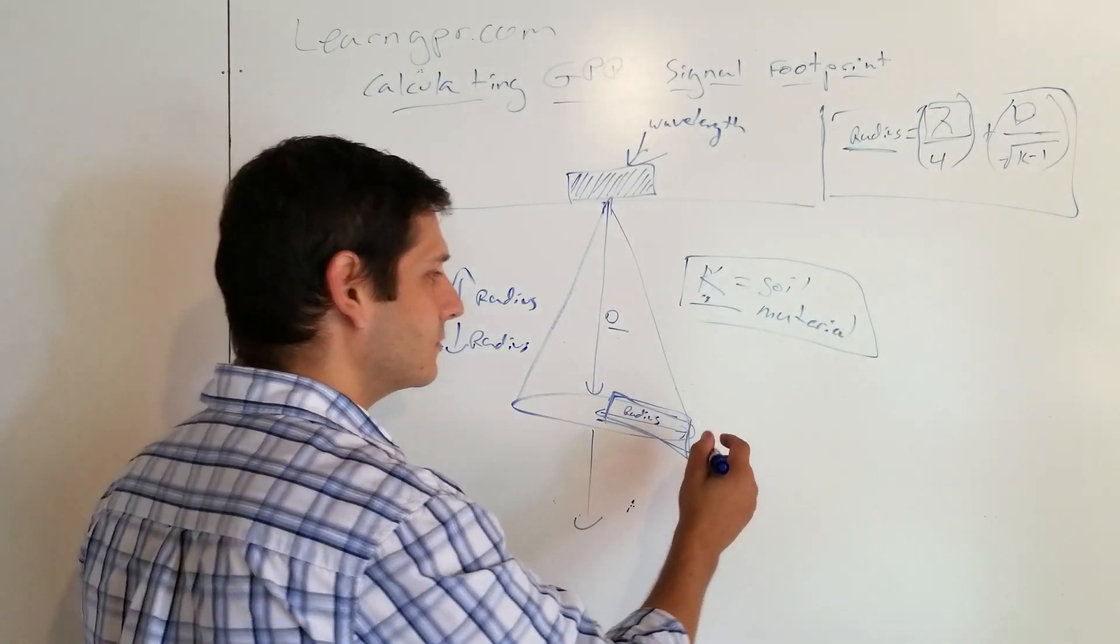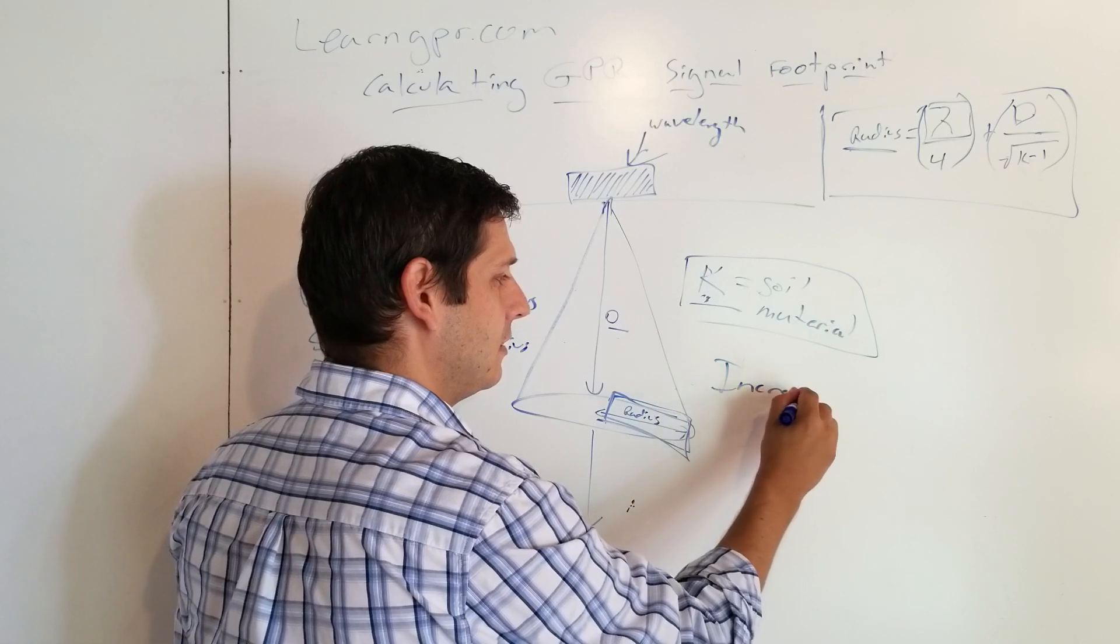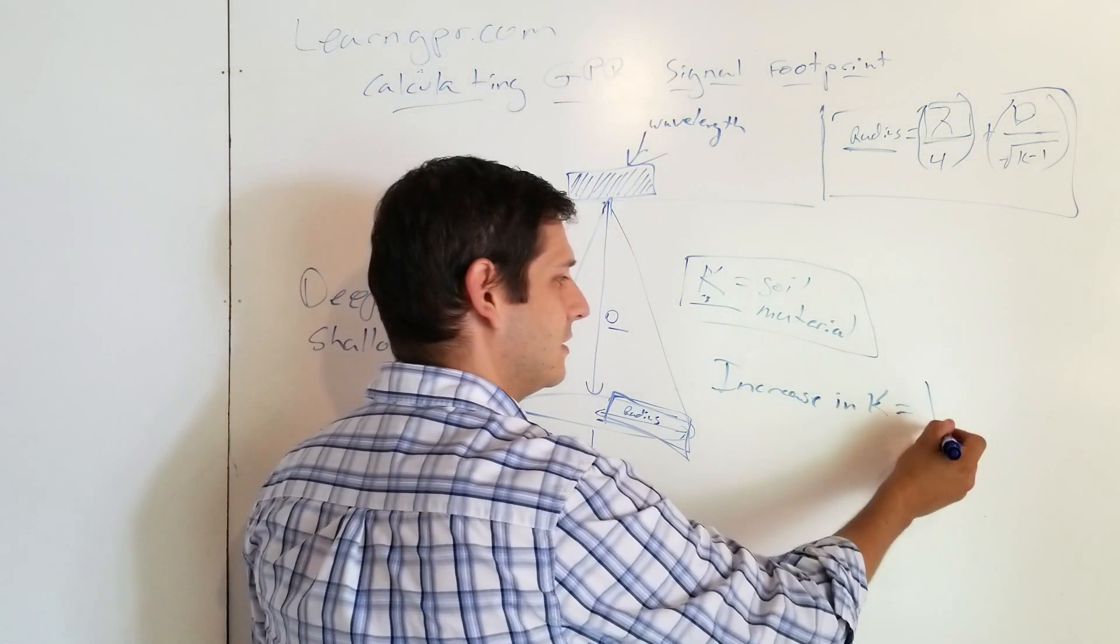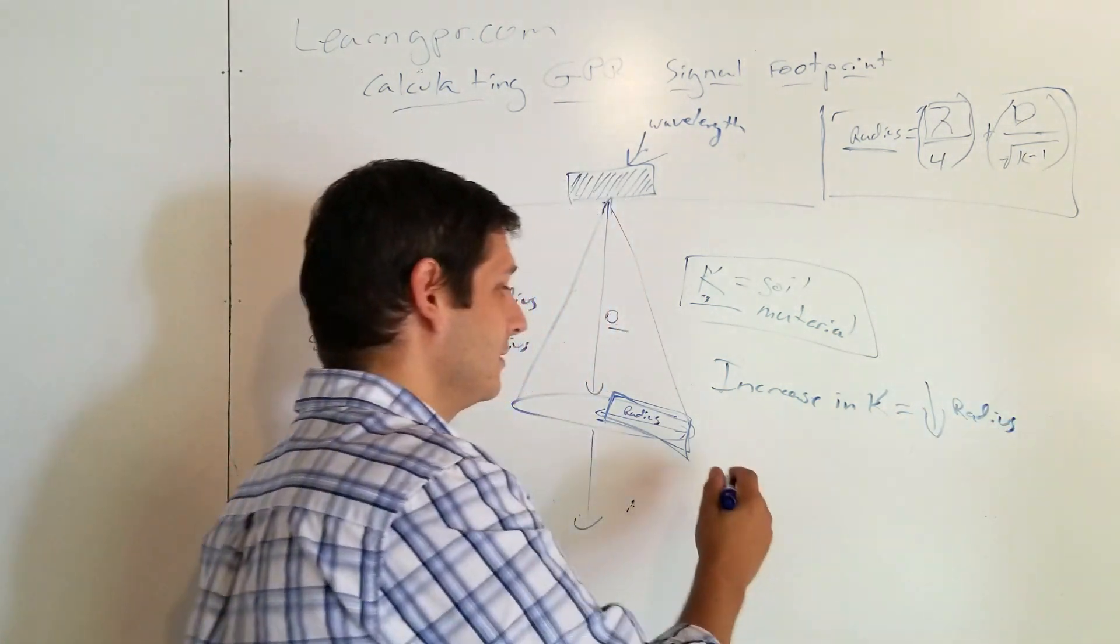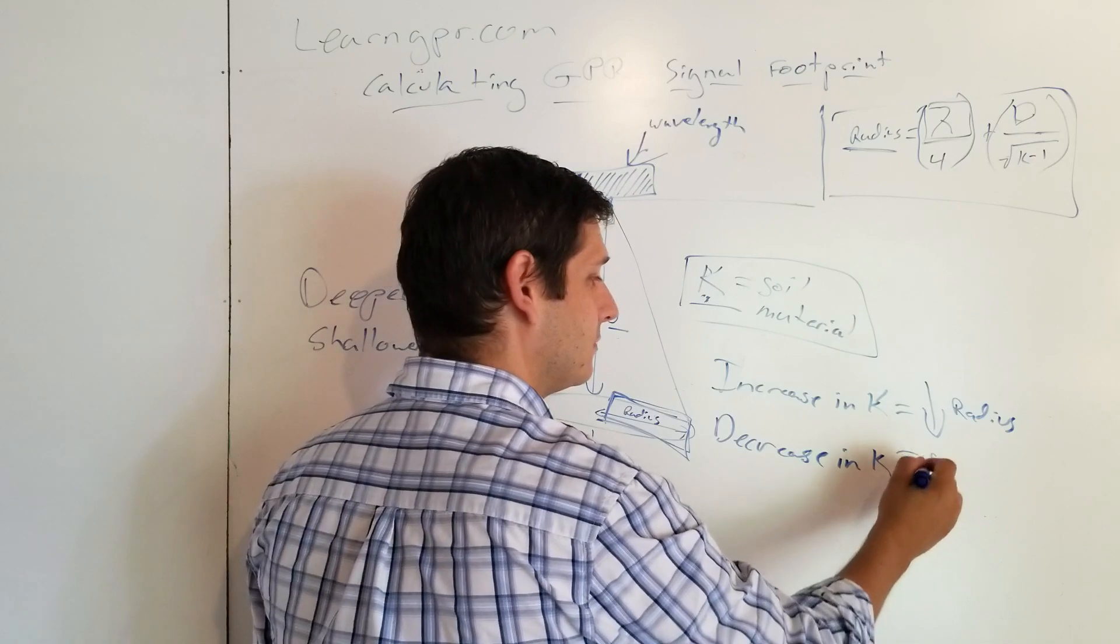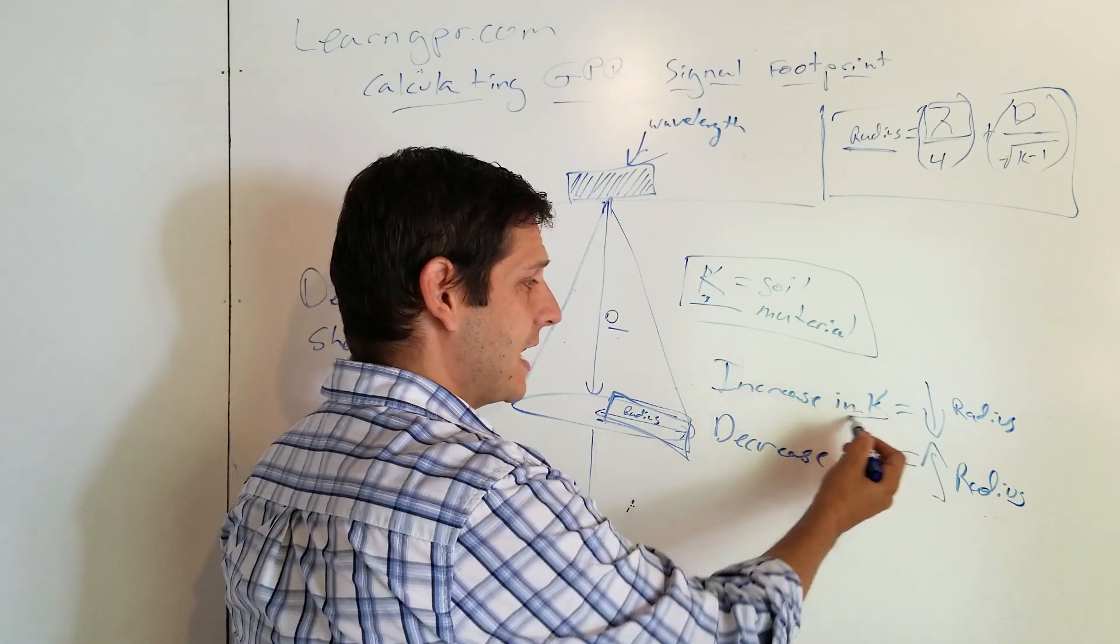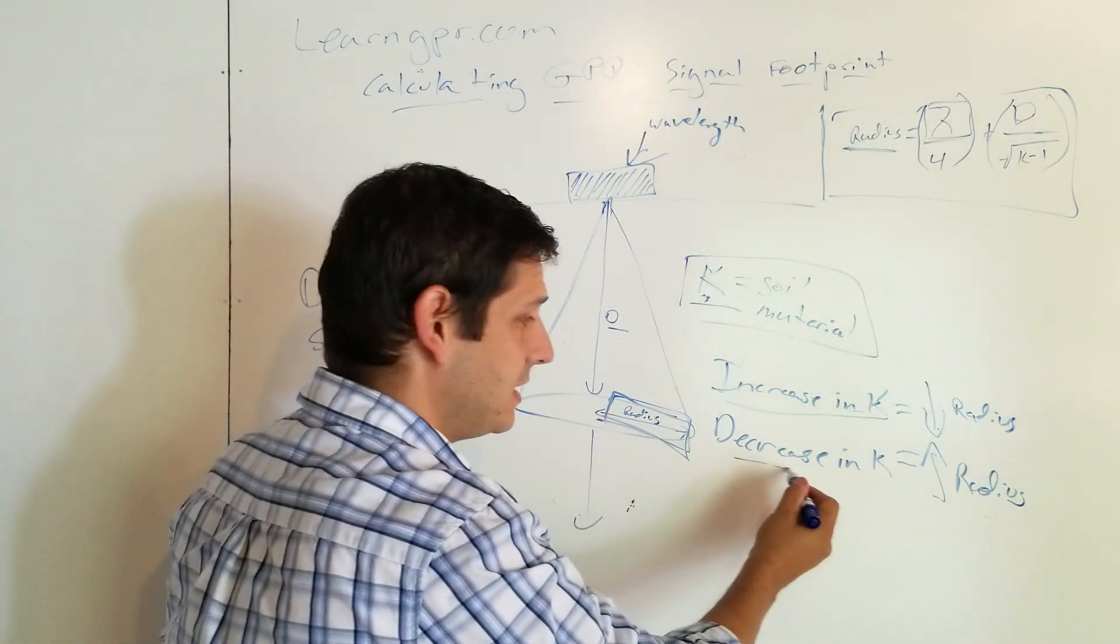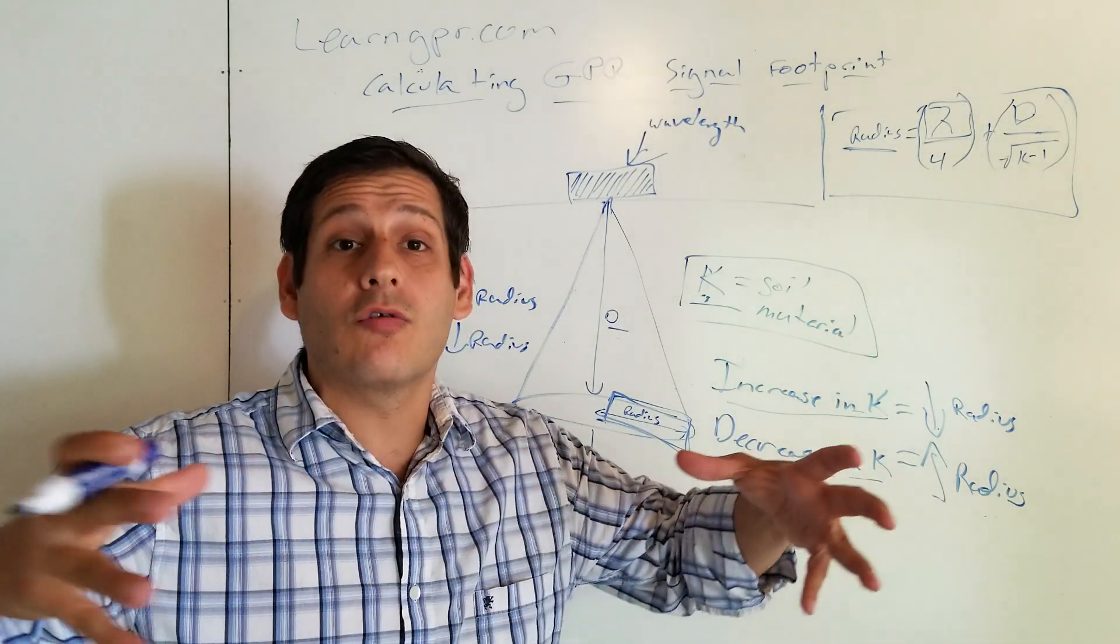Now, for permittivity, K increases, increase in K equals decrease in radius. And a decrease in K equals increase in radius. So what does that mean? That means an increase in K, which is water saturated soils, you're going to get less spreading. But a decrease in K, which would be like dry sand or concrete or something like that, you're going to get greater spreading.